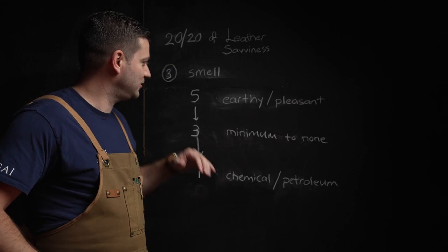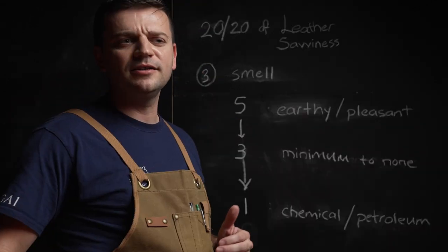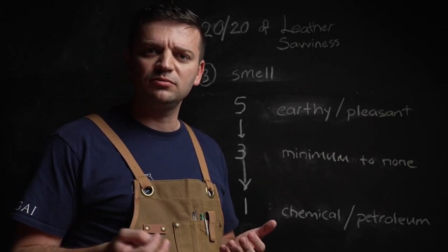Once you see an item like this and you smell it, you will know it's a five. Going down the line, number three would be a leather that doesn't smell much—it's a minimum smell. It doesn't bother you, it's not disturbing or pleasant, or it doesn't smell at all.